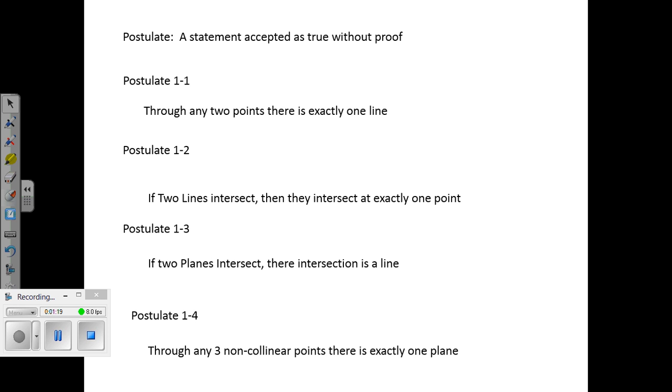Postulate 1-2: if two lines intersect, then they intersect at exactly one point. Postulate 1-3: if two planes intersect, their intersection is a line. Postulate 1-4: through any three non-collinear points, there's exactly one plane.